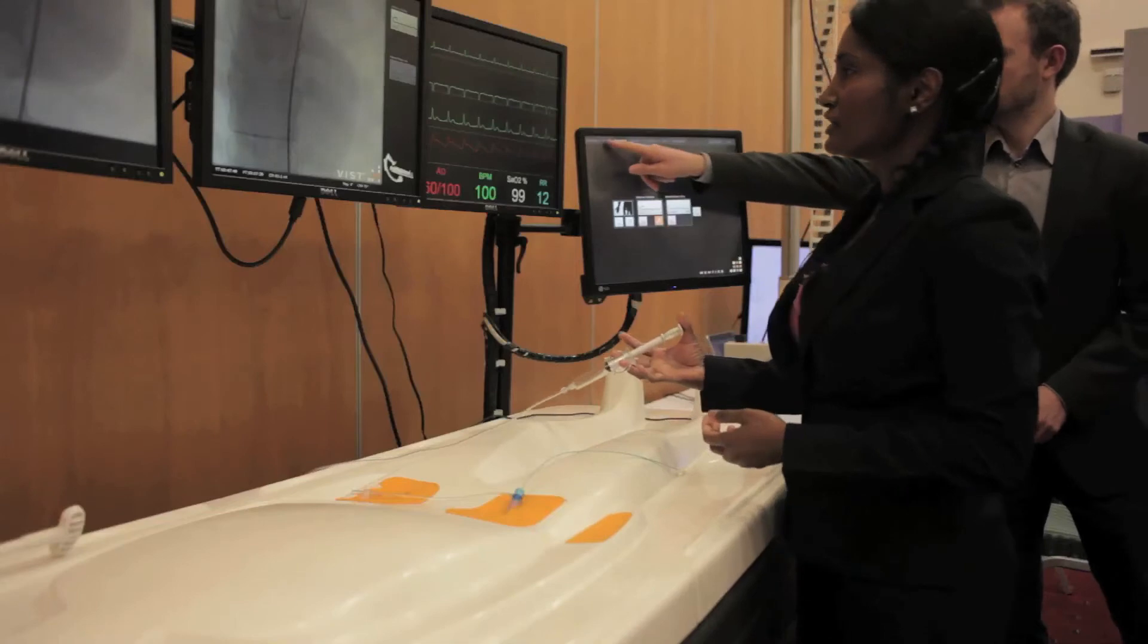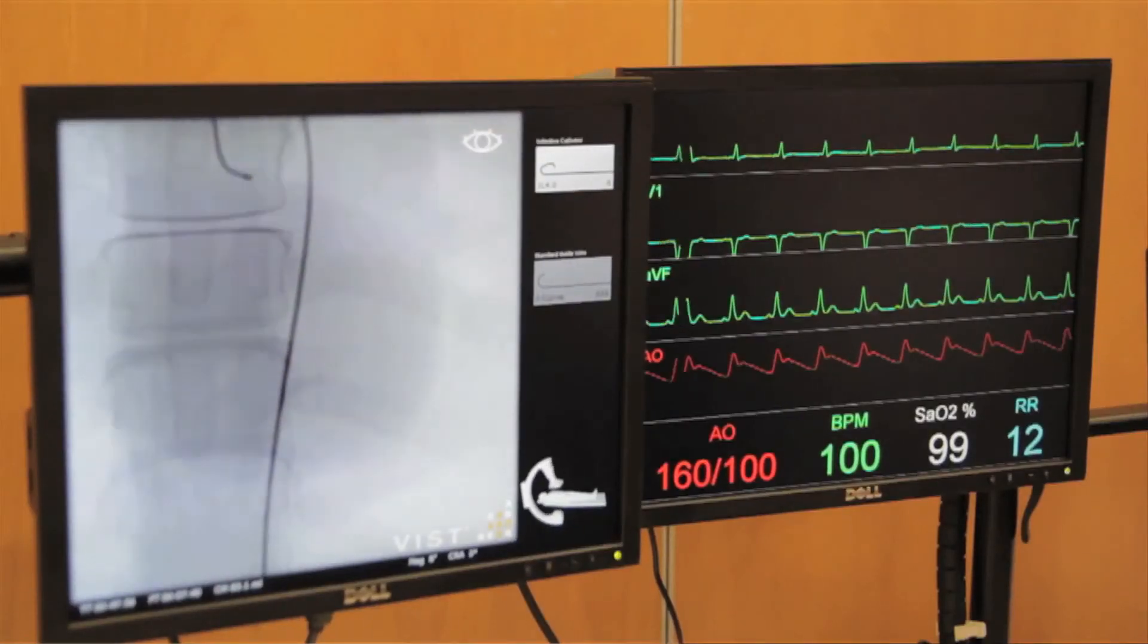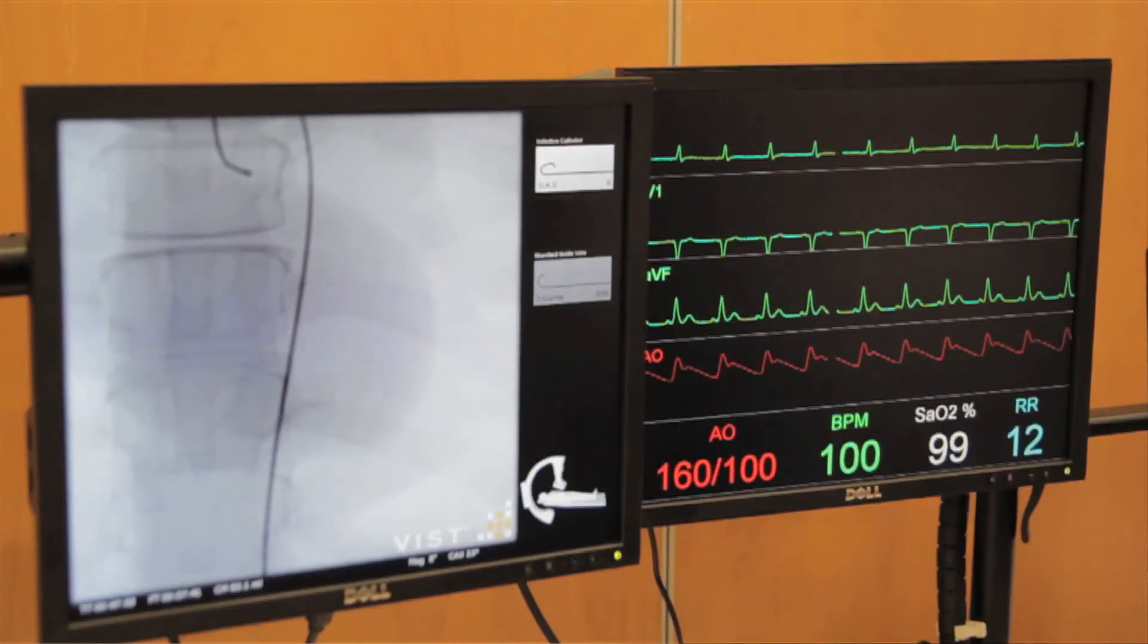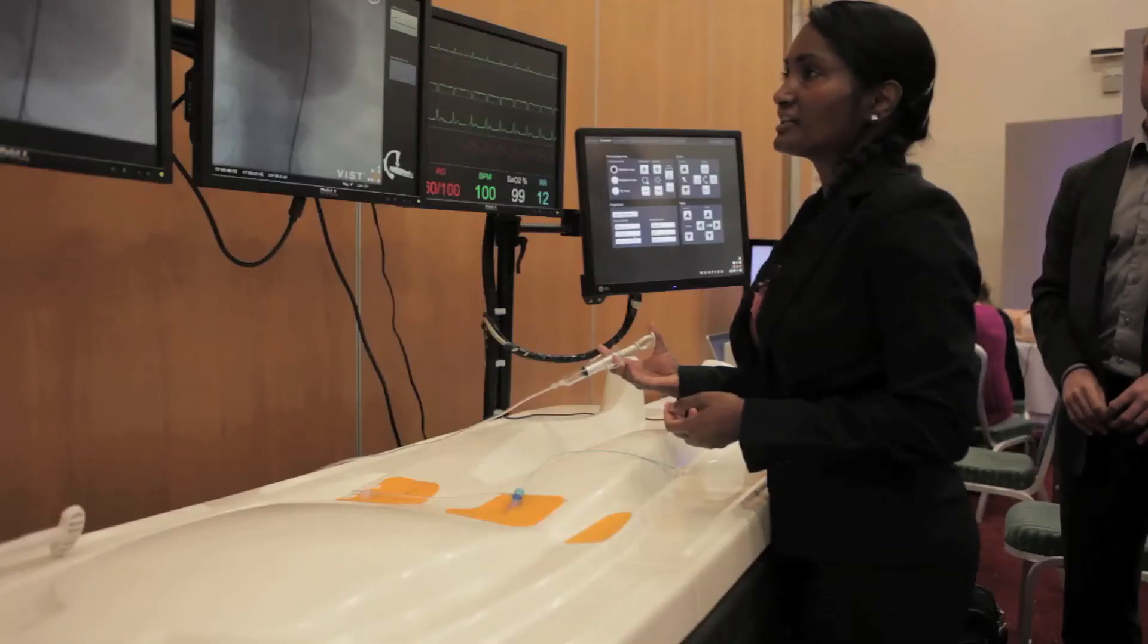So we will now go into the PA caudal view. Okay. And then we acquire. So initially you do fluoroscopy in order to ensure that the catheter has not moved.